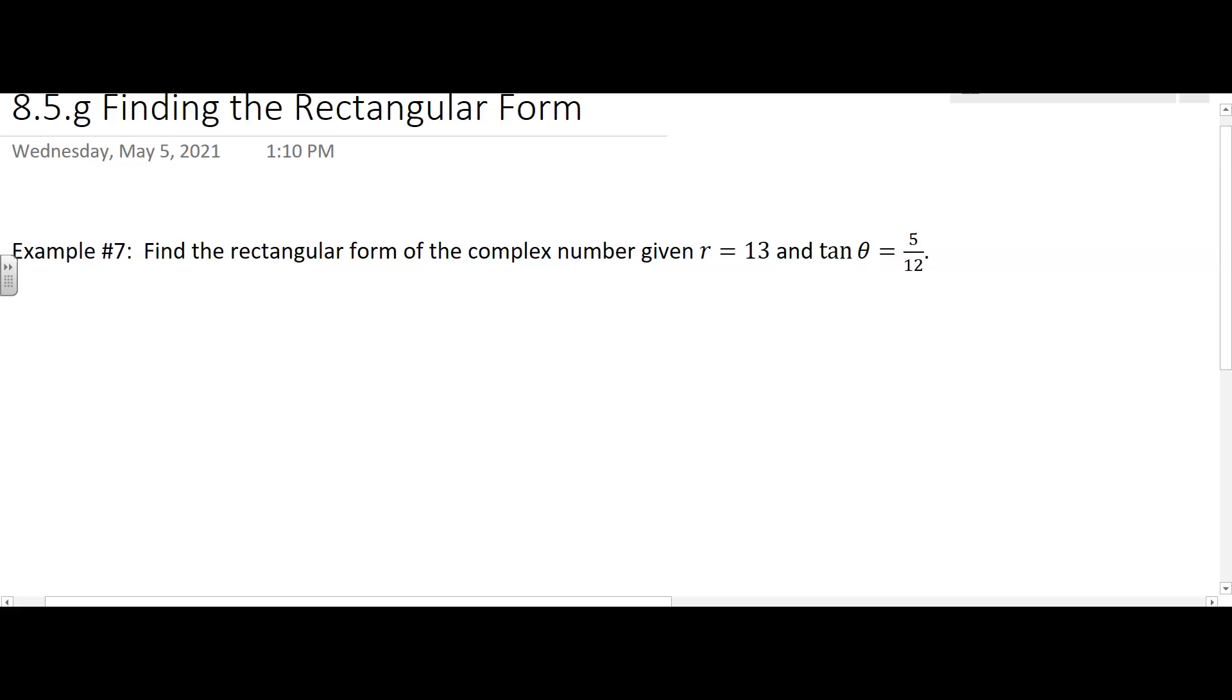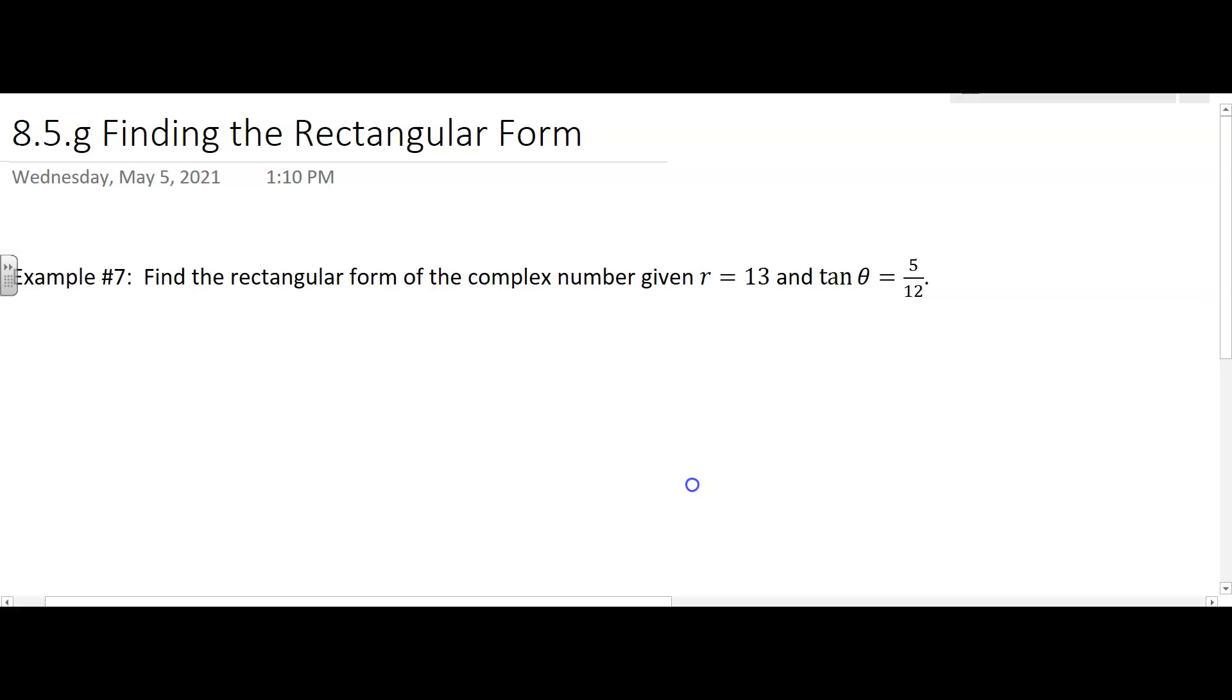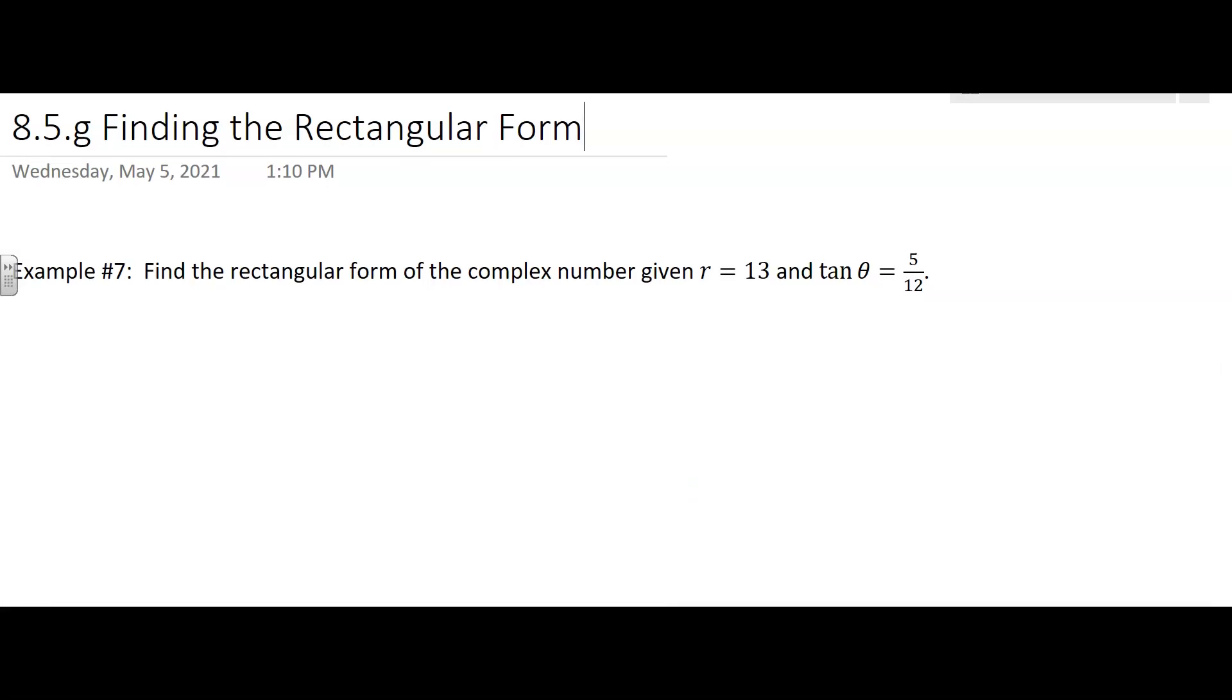This time we're going to find the complex number in rectangular form, but they don't give us the complex number in polar form. They just give us some information. It says find the rectangular form of the complex number given r = 13 and tan θ = 5/12.